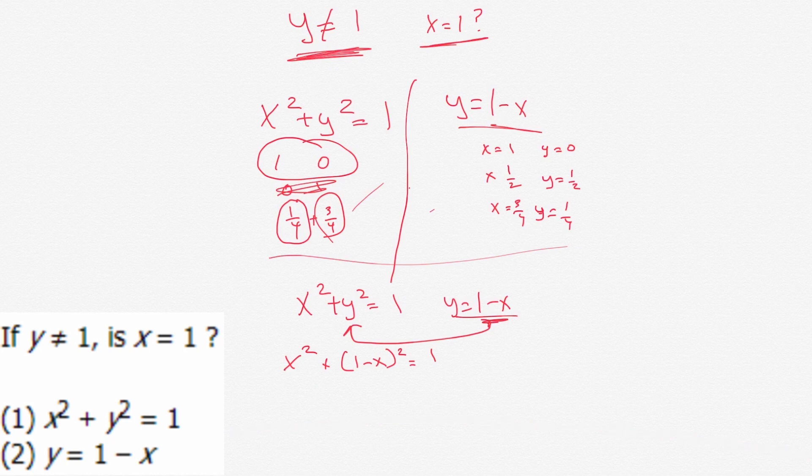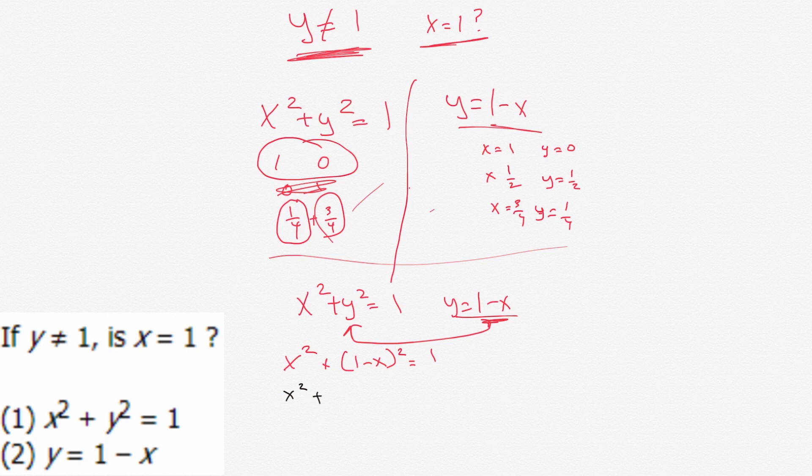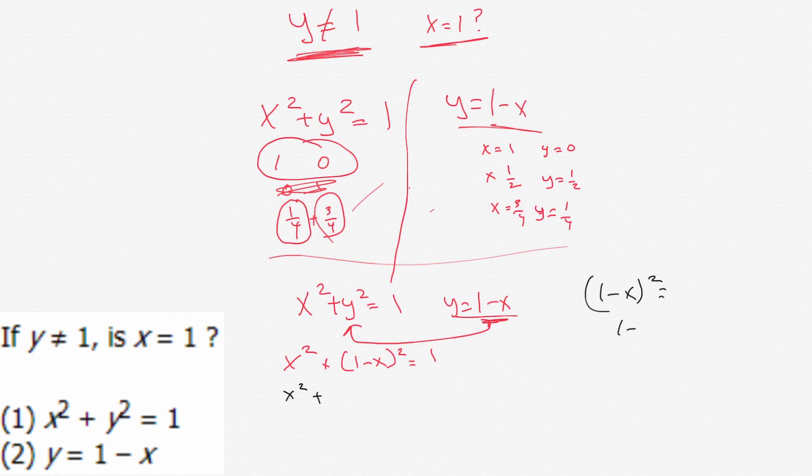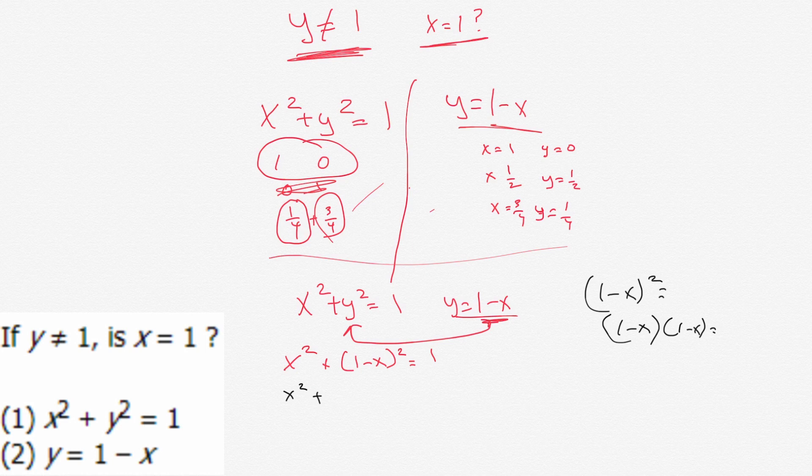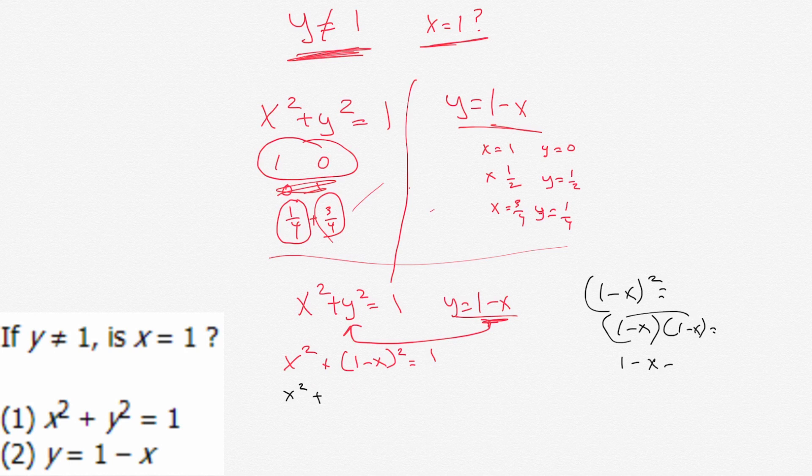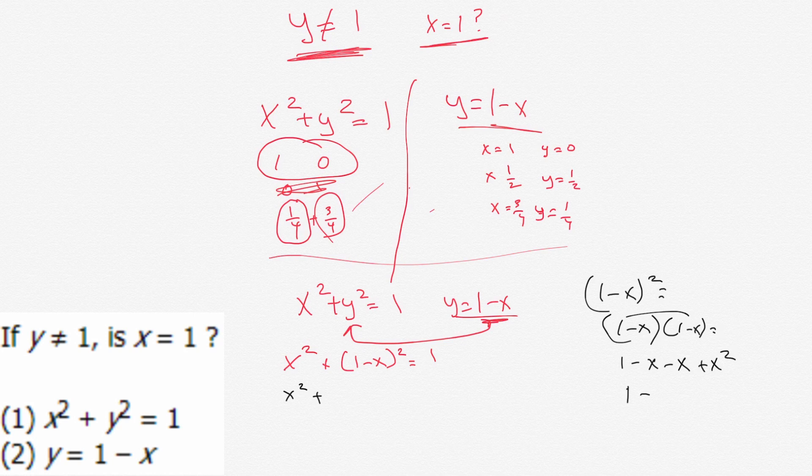So that would then give us x squared plus one minus x squared equals one. Let's go over here. One minus x squared equals... There's some formulas to do these quicker, but even if you just did the FOIL, one times one is one, and then you have minus x, that's first, that's the outer, inner is minus x, and then plus x squared, right? So one minus two x plus x squared.